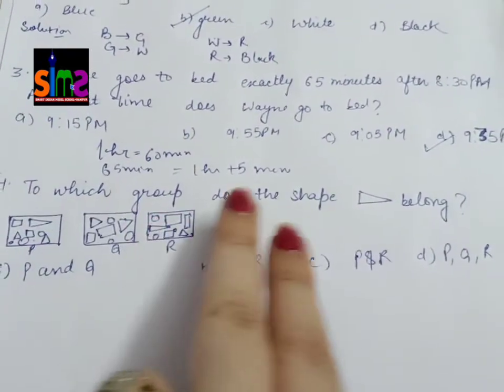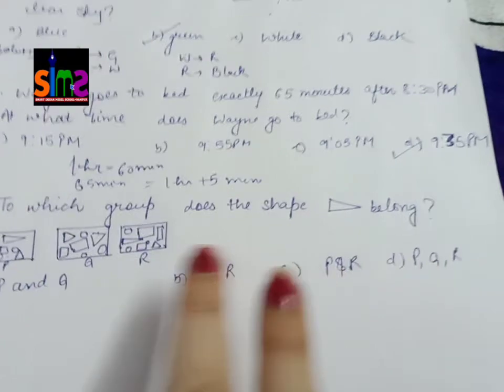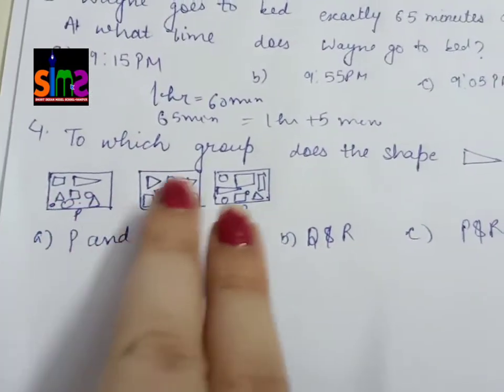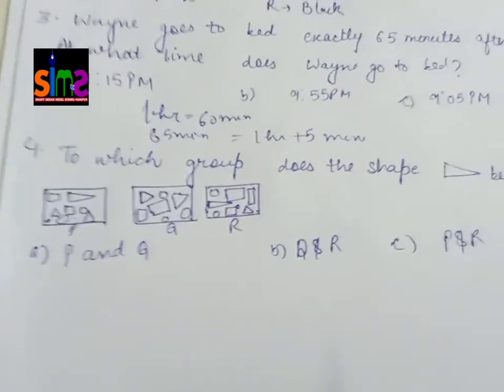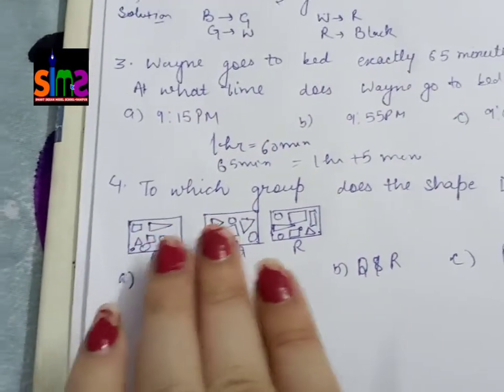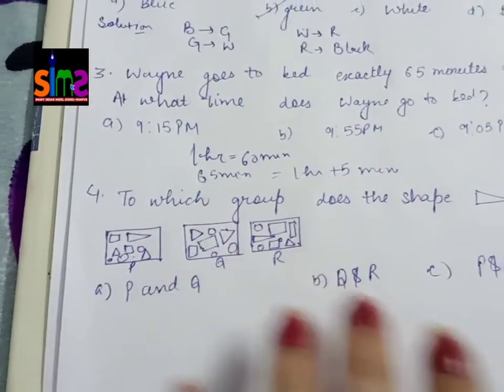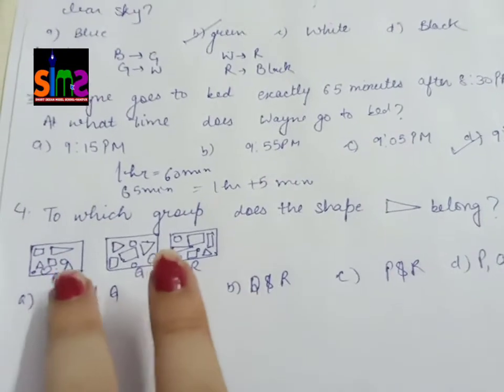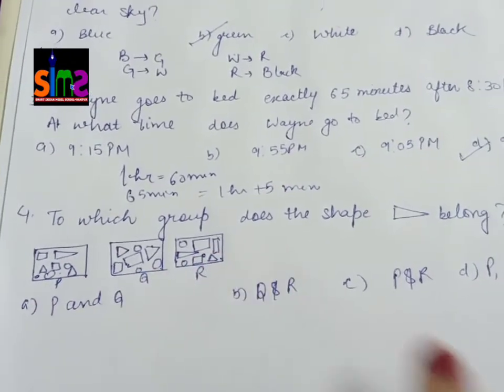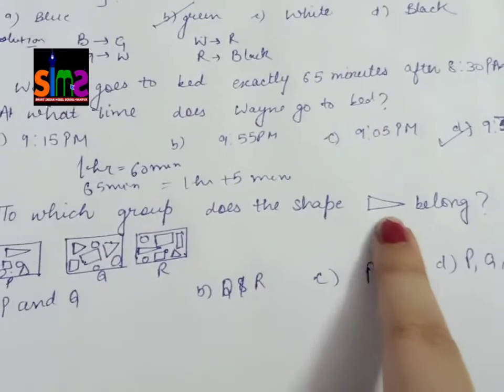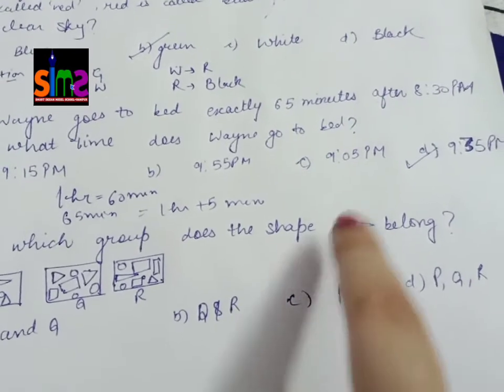Next question: to which group does this shape belong? Now tell me, what I have given you as a question is clear, though it has not been drawn well. But you will get an idea. They want to ask which of these three groups, P, Q, and R, does this triangle shape belong to?